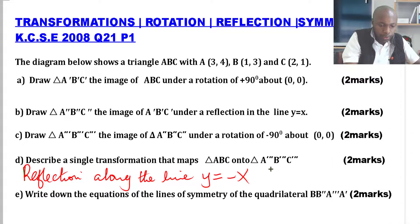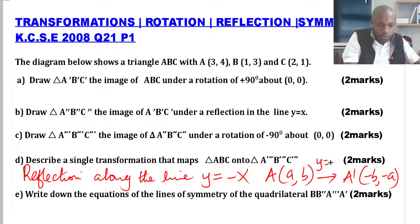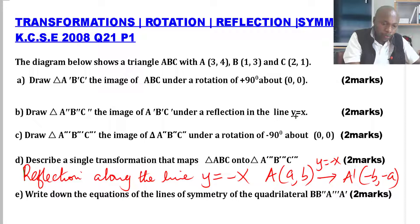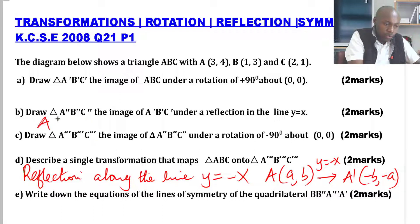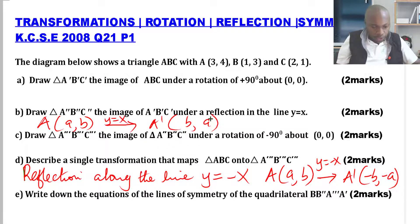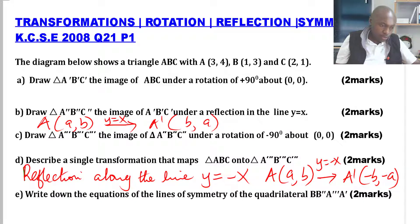That reflection maps a general point (a, b) along y = -x onto (-b, -a). We also identified in part B that a reflection in the line y = x maps a point (a, b) to (b, a) — the coordinates are simply reversed. But for y = -x, the coordinates are reversed and the signs change. That is the solution for part D.